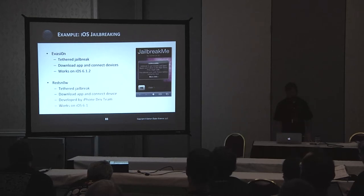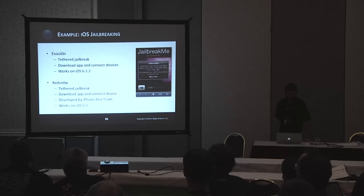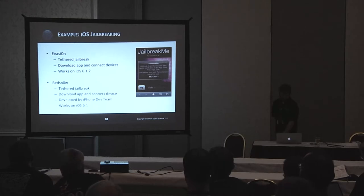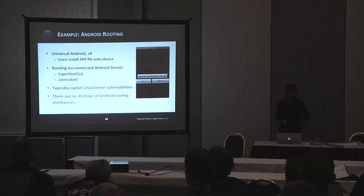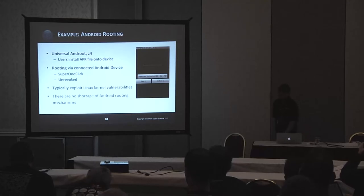A couple of jailbreaking tools: Evasi0n and RedSn0w for iOS — they're both tethered jailbreaks. You download the app, connect the device, and these work on iOS 6.1.2 and 6.1. For Android, there are a large number of rooting scripts and apps available. Universal Android Z4 basically has the user install an APK file on the device itself. Rooting can also be done via a connected Android device using Super One Click or unrevoked, and it typically exploits a Linux security vulnerability in the kernel. There's no shortage of Android rooting mechanisms.